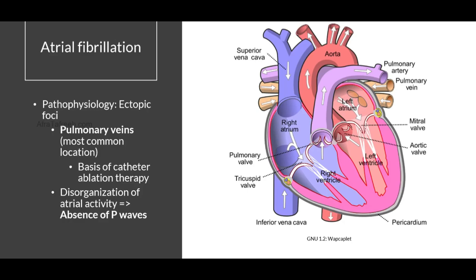Atrial fibrillation is an example of a supraventricular tachyarrhythmia, and therefore it is going to originate from an ectopic foci located above the ventricle. In particular, the most common location of origination is the pulmonary veins, shown here in this schematic. In AFib, our rhythm originates from these pulmonary veins rather than the sinoatrial node. These ectopic foci in the pulmonary veins are the basis for catheter ablation therapy. This disorganized atrial activity will ultimately manifest as an absence of P waves on our EKG, which is highly characteristic for atrial fibrillation.